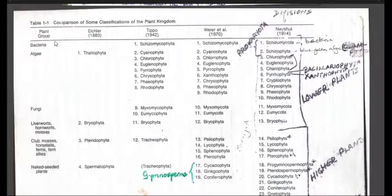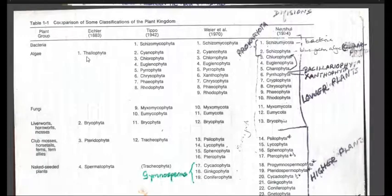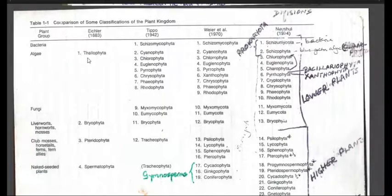This slide is called 'Comparisons of Classification,' showing how people were grouping organisms from 1883 up to 1974. As time advances, classification becomes more and more robust, reflecting our growing understanding of the environment. For example, what we once called Thallophyta was later split — we realized it contained things called bacteria or Schizomycophyta, and also the algae. These names might seem scary, but the only way to get over them is to say them, write them, and interact with them.